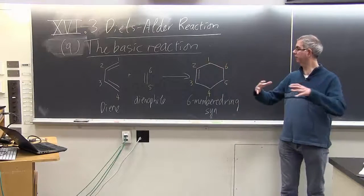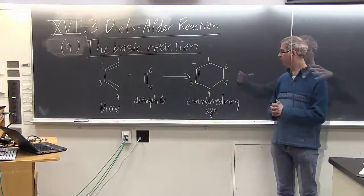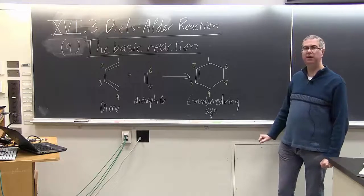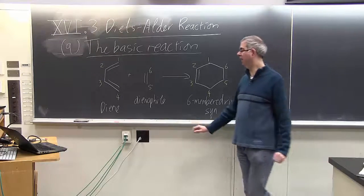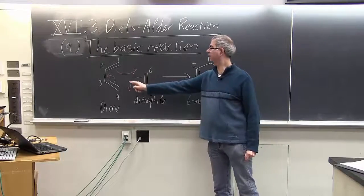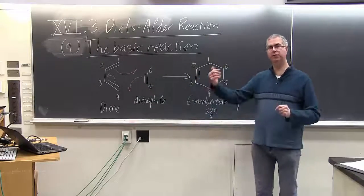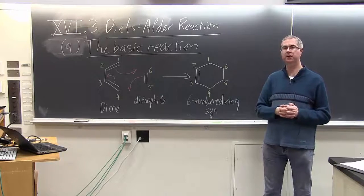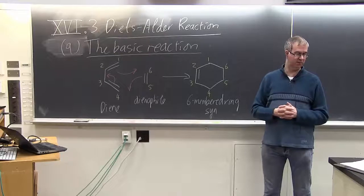And because it involves a cyclic intermediate, the bonds form all at the same time. Now let me show the arrows for this. You can see we actually have a cyclic set of arrows. We're used to seeing arrows go in a series, but in this case they go in a cycle.